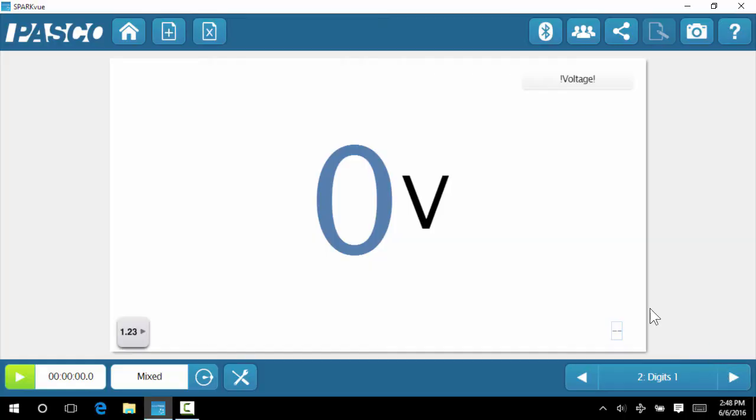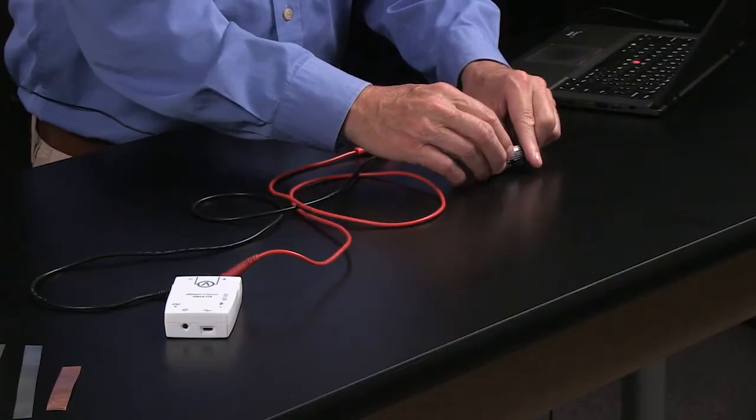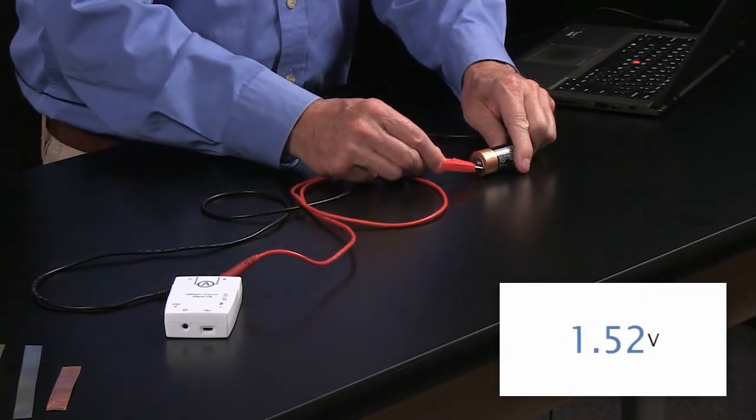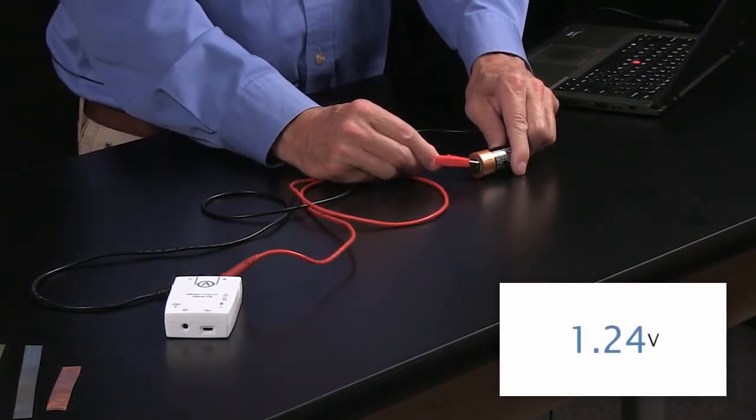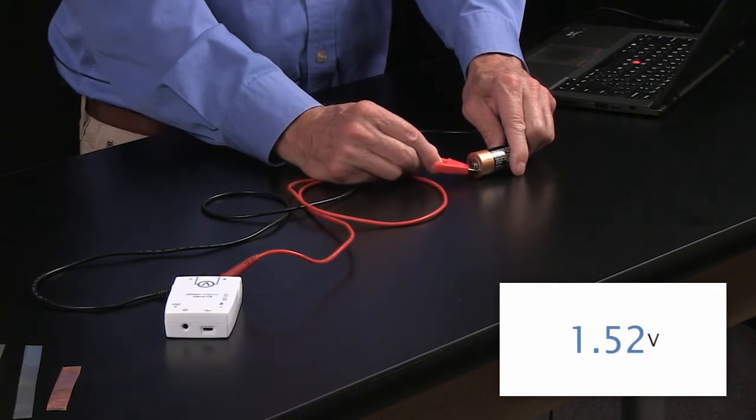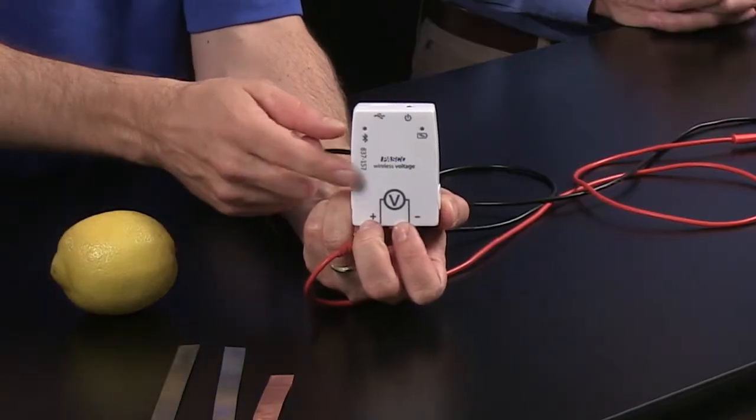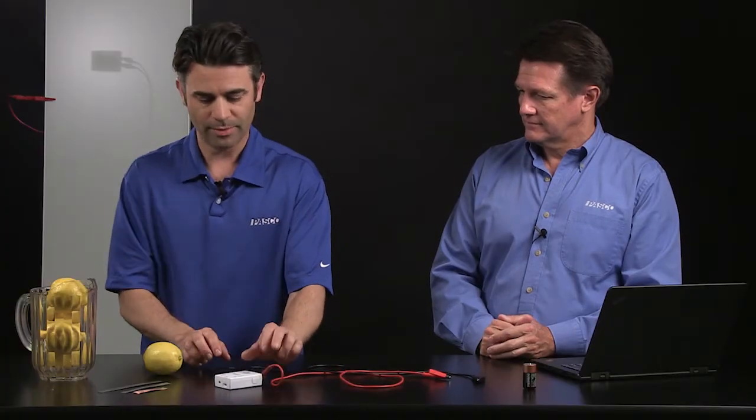So why don't we make sure this is working by checking an actual battery? Okay, I'm going to start data collection with the green arrow. Lay it down on its side, makes it a little bit easier for me. I connected the negative, the black one, to the bottom of the battery, the red one to the top, and it's reading 1.52 volts. It is a brand new battery that's rated at 1.5 volts, so that sounds pretty good to me. And the negative and positive are indicated on the battery, and they're also indicated on the voltage sensor box, so you can know which one is the positive and negative.